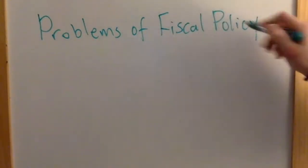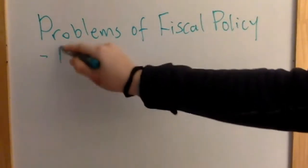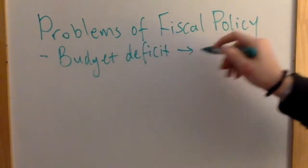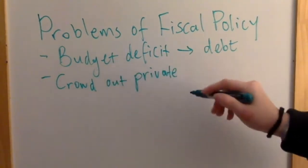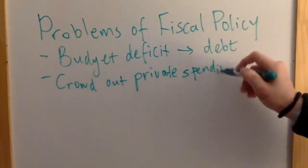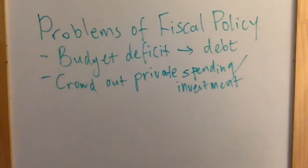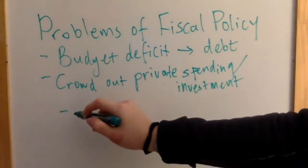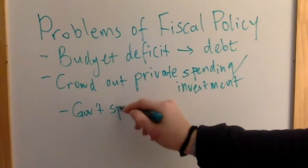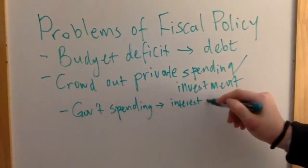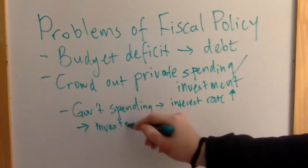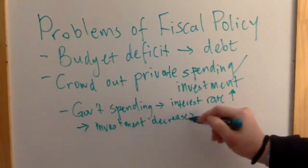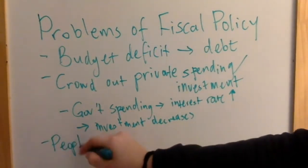Fiscal policy is great to use in these situations, but it also has its flaws. Because fiscal policy requires the government to spend money, it can result in a budget deficit and accumulated debt. Furthermore, the government spending may crowd out private investment and consumption. Looking at the market for loanable funds, the government spending will cause the demand to shift upwards, resulting in an increase in interest rates. In response, consumption and investment will decrease, and so will AD, thus making the fiscal policy completely ineffective.